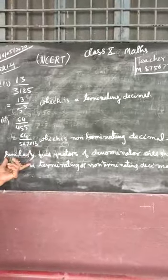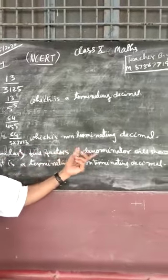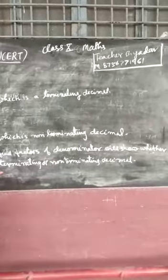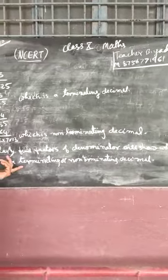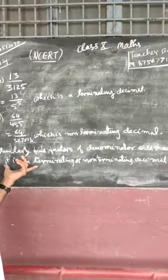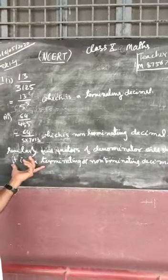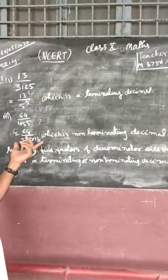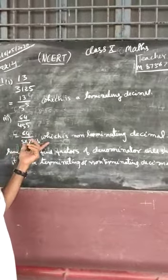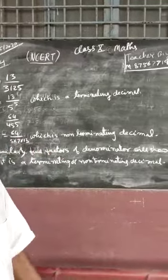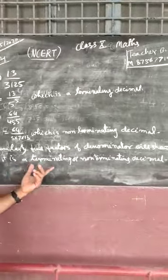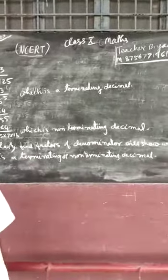Similarly, find the factors of the denominator for the other questions. If they have factors of only 2 and 5, they will be terminating decimals. Otherwise, if they have factors of 2 and 5 along with 3, 7, 11, 13, etc., then it will be a non-terminating decimal.